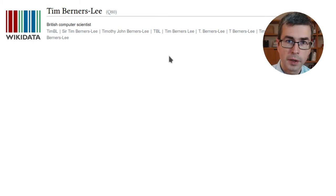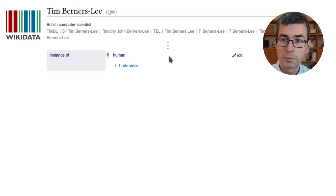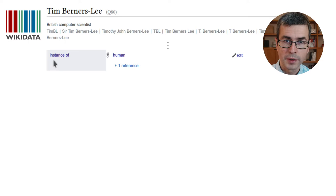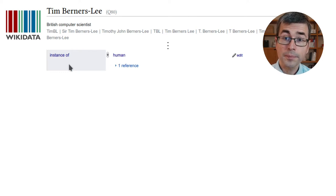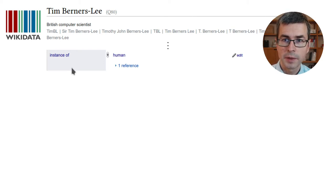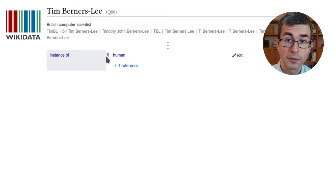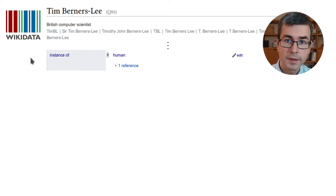Below that comes the main part of the knowledge base: the actual statements about the subject. In Tim Berners-Lee's case there are many statements. Here's a very simple one: Tim Berners-Lee is an instance of human — he's an element of the class human. This resembles very much what we have seen in RDF. Tim Berners-Lee is a subject, 'instance of' would be the predicate, and 'human' the object — a small directed relationship with the label 'instance of.' So this looks very much like RDF and the directed labeled graph.